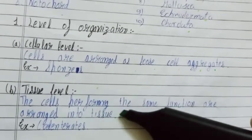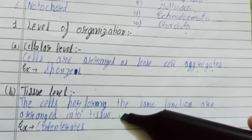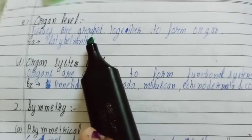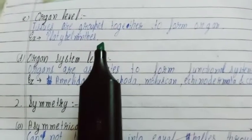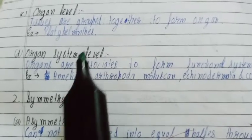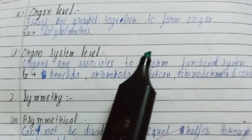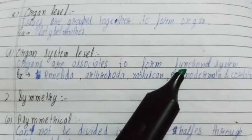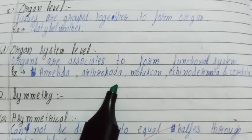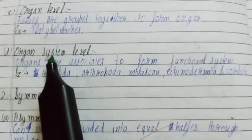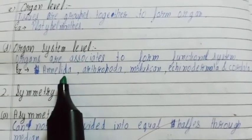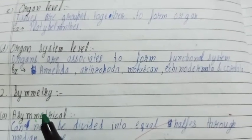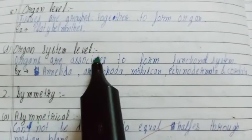Tissue level: cells performing the same function are arranged into tissues. Examples are Cnidarians. Organ level: tissues are grouped together to form organs. Example is Platyhelminthes. Organ system level: if organs are associated in the form of functional systems like the digestive system or circulatory system, then it is called organ system level organization. Examples are Annelida, Arthropoda, Mollusca, Echinodermata, and Chordata. All higher classes are included in organ system level.